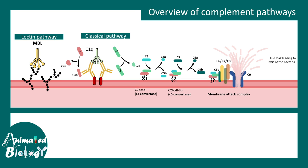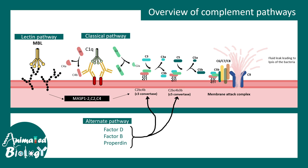This was basically the classical pathway. The lectin-dependent pathway works via MASP1, C2 and C4, and converges at the level of C3 convertase. Many pathways actually converge at the level of C3 and C5 convertase, such as the alternative pathway. The alternative pathway requires factors like Factor D, Factor B, or properdin. They all converge into C3 convertase or C5 convertase.